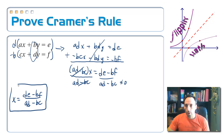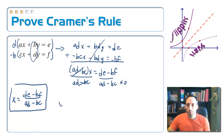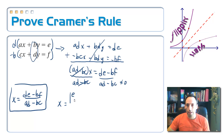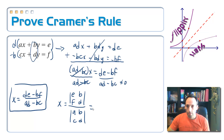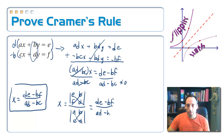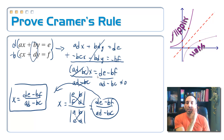Now I'm going to match that up to what you're supposed to get if you use Cramer's Rule. I find x equal to the determinant of — take the x's out, the a and the c, and put e and f in their place — with bd on the bottom, divided by the determinant of the coefficient matrix, which is abcd. Simplifying: up top I have de minus bf, and on the bottom I have ad minus bc. That is exactly what we just found — so we have just proven it for x.